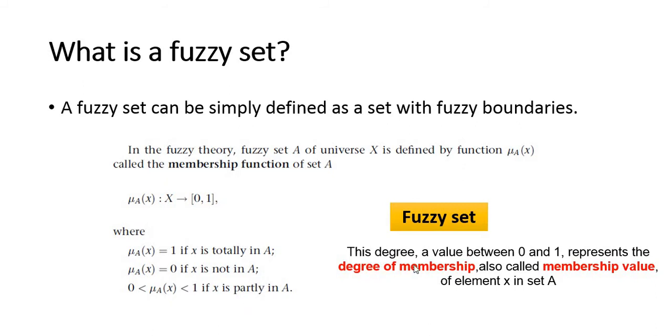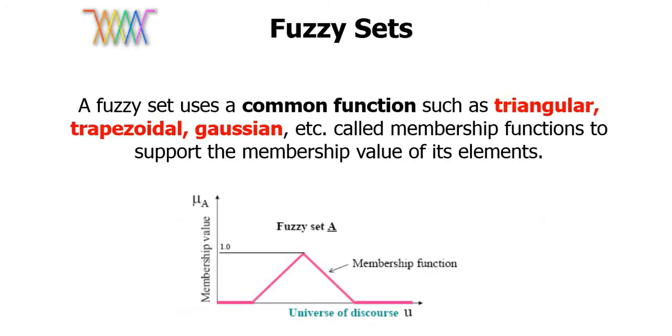This degree, a value between 0 and 1, represents the degree of membership, also called membership value of element x in set A. The maximum is 1 and the lowest is 0.